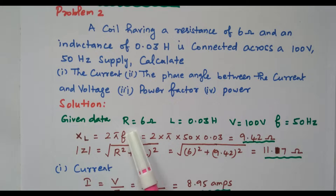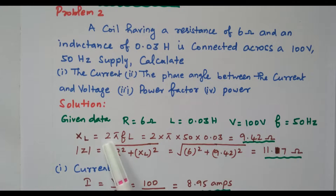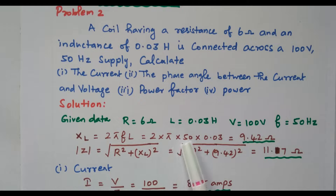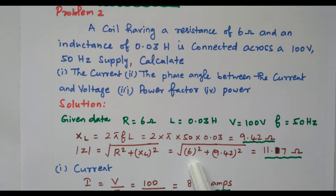From the given data: R = 6 ohms, L = 0.03 Henry, voltage = 100 V, frequency = 50 Hz. First, we find XL = 2πfL = 2π × 50 × 0.03 = 9.42 ohms. Then impedance Z = √(R² + XL²) = √(6² + 9.42²) = √(36 + 88.74) = 11.17 ohms.